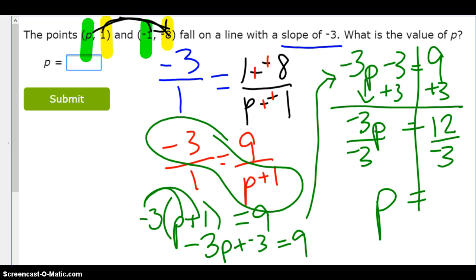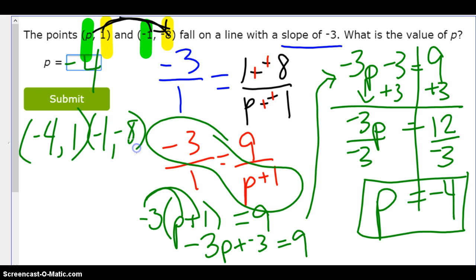So P equals negative 4. Oh, isn't that fun? Negative 4. So now let's check. If I add negative 4, 1. And my other point is negative 1, negative 8. Alright, let's see if that works.